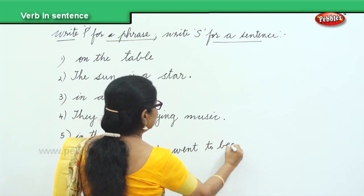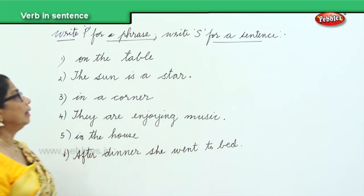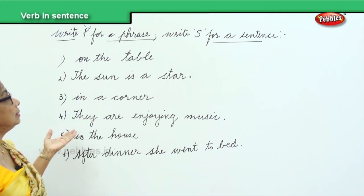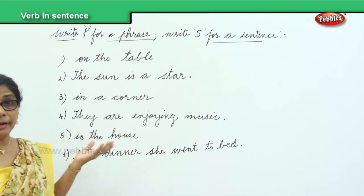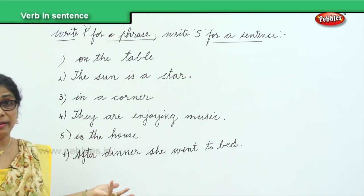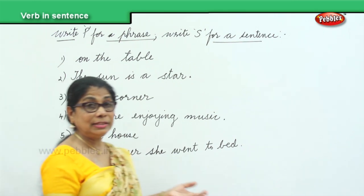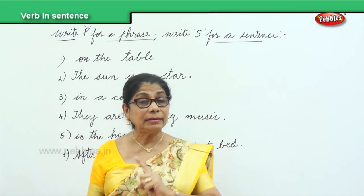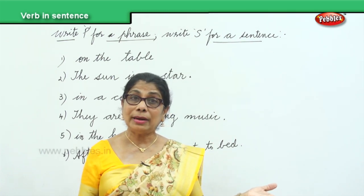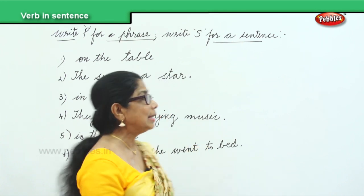Now look at each of these. There are phrases and there are sentences. Write P for phrase and S for sentence. For a sentence, you need to have a capital letter, end with a full stop or question mark or exclamation mark, and it must have a verb and make a complete sentence.